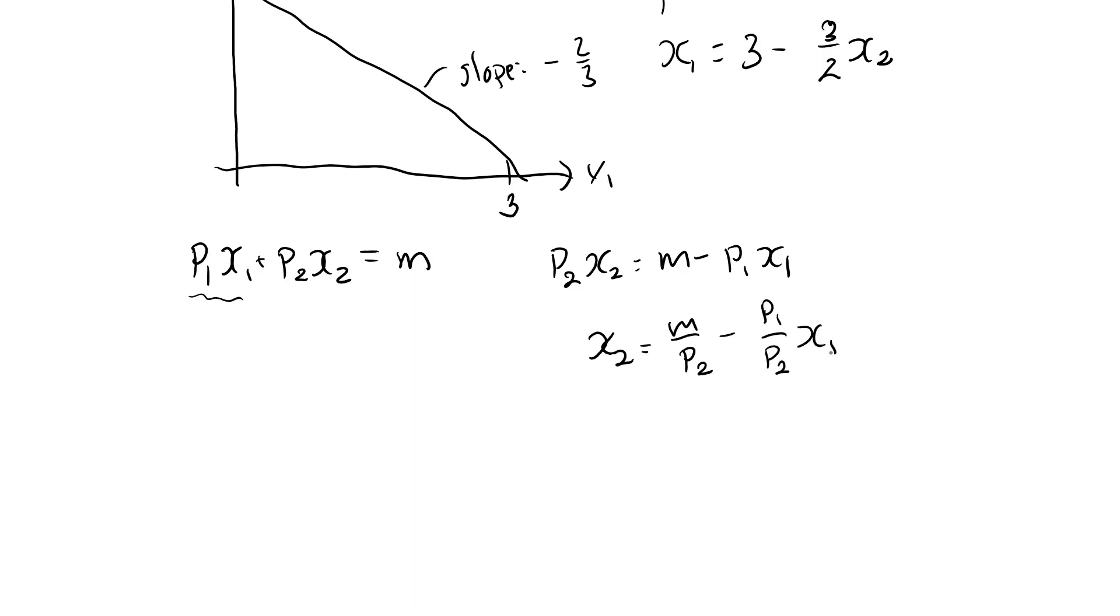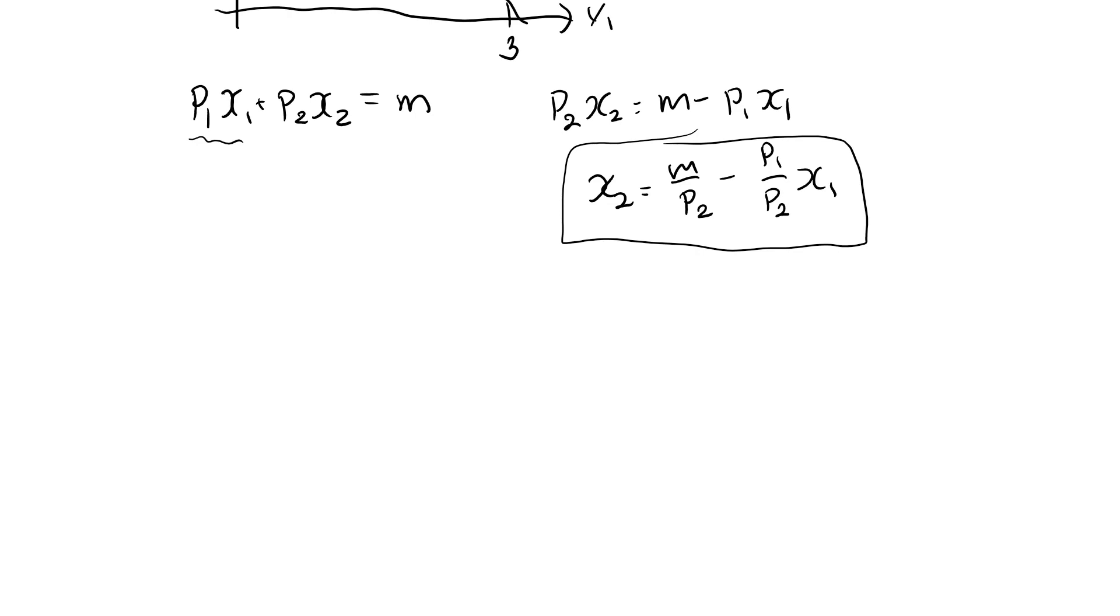x2 equal to m over p2 minus p1 over p2 times x1. This is an explicit relationship in x2. To make it explicit in x1, we do a similar thing, p1 x1 equal to m minus p2 x2, move x2 over to the other side, divide by p1, and we have m over p1 minus p2 over p1 x2.